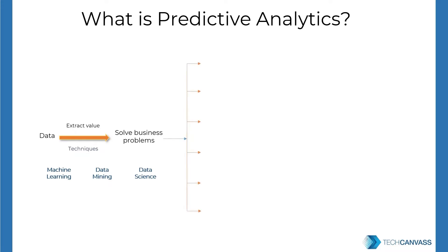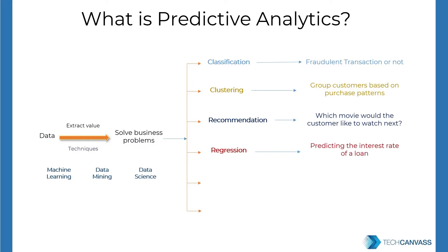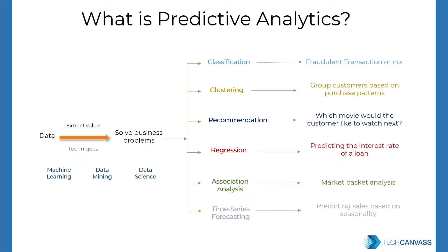Predictive analytics is commonly used to solve different business problems like classification — for example, checking whether a transaction is fraudulent or not. Clustering, where we group customers based on purchase patterns. Recommendation, where we suggest which movies a customer would like to watch next. Regression, for example predicting the interest rate of a loan. Association analysis, where market basket analysis is a good example. And time series forecasting, for example predicting sales based on seasonality. These are a few common techniques that are used.